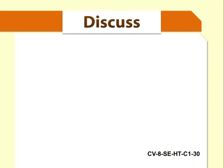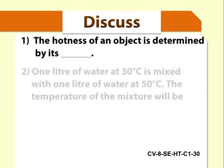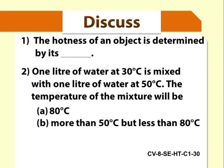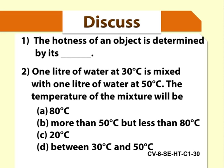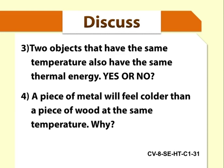Here are some questions. Discuss with your friends. The hotness of an object is determined by its dash. 1 litre of water at 30 degrees Celsius is mixed with 1 litre of water at 50 degrees Celsius. The temperature of the mixture will be. Children, note this down in your book. Two objects that have the same temperature also have the same thermal energy. Yes or no? A piece of metal will feel colder than a piece of wood at the same temperature. Why? Children, note this down in your book.